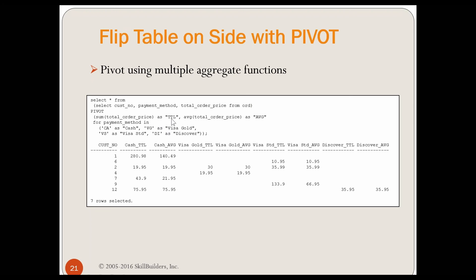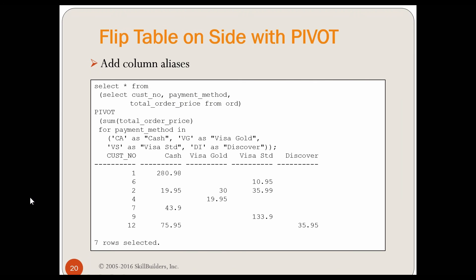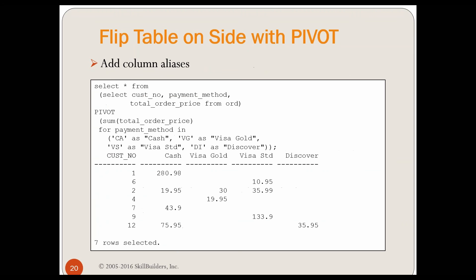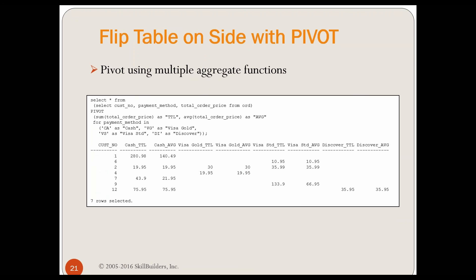Now, by the way, if you didn't have a column alias here as total and as average, you'd get an error. You'd get a syntax error on this, because Oracle needs separate column names for each of those, and it needs to tell you which it is, and it would give you an error. And on the previous page, I could have said for sum of total order price as total or as total order price or whatever I wanted. If I had done that, it would have said total cash, total visa gold, and so on. I didn't need it here, because there's only one aggregate function. But when you have multiple aggregate functions, then you need it here. You need this column alias. So we added column aliases. We did multiple aggregate functions. We did a sum and an average, and that's great.